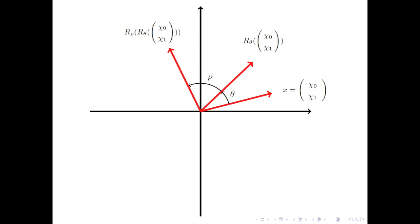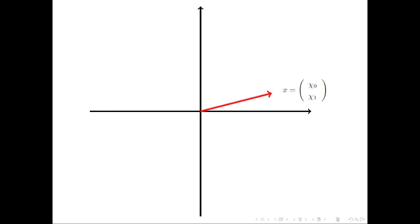The result is r sub rho of r sub theta of x. We illustrate that we could have just rotated the vector x through an angle theta plus rho to yield the same result as first rotating through angle theta and then through angle rho.